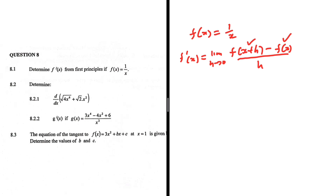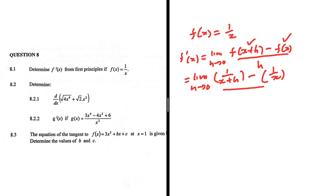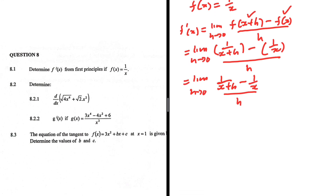So let's go ahead and substitute. The limit as h tends to 0, we are going to have 1 divided by x plus h — that is f of x plus h — minus f of x itself, which is 1 over x, and then divided by h. So the limit as h tends to 0 is going to be 1 over x plus h minus 1 over x, everything divided by h. So let's go ahead and simplify the numerator.